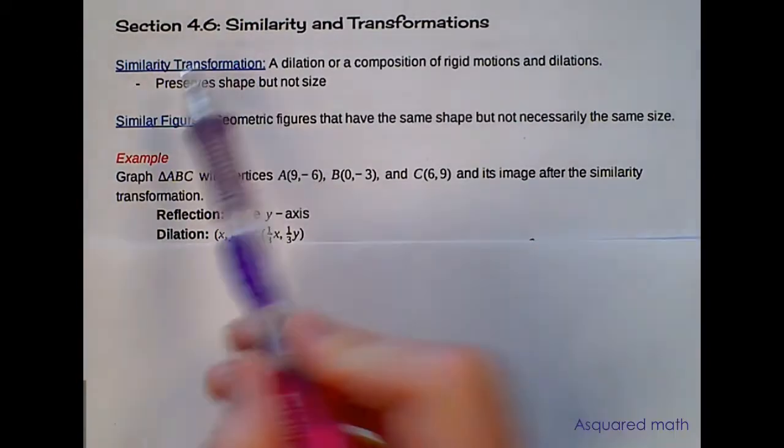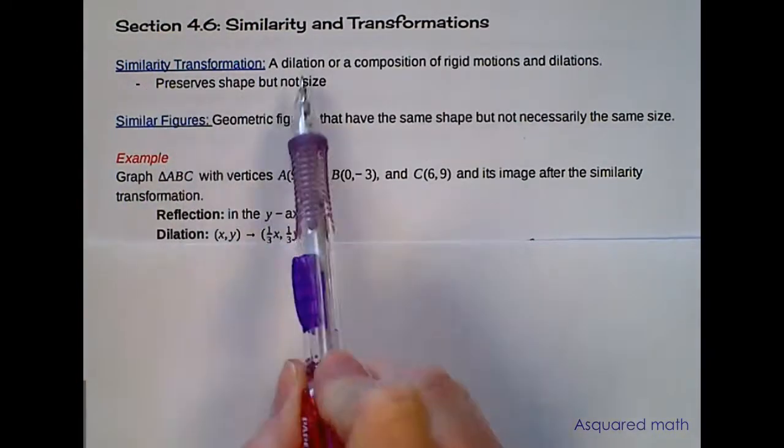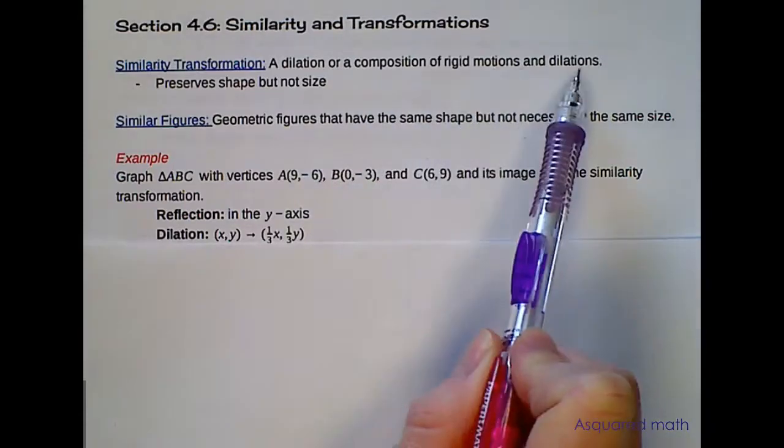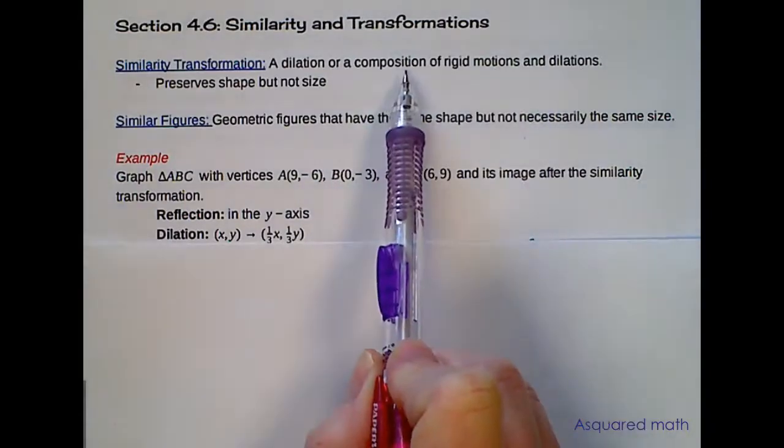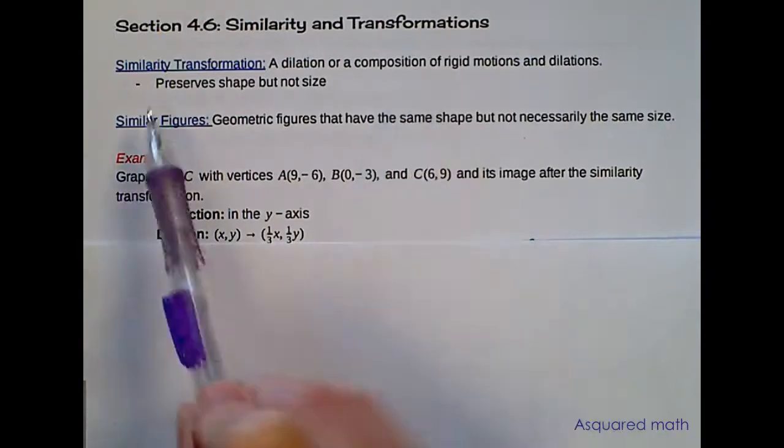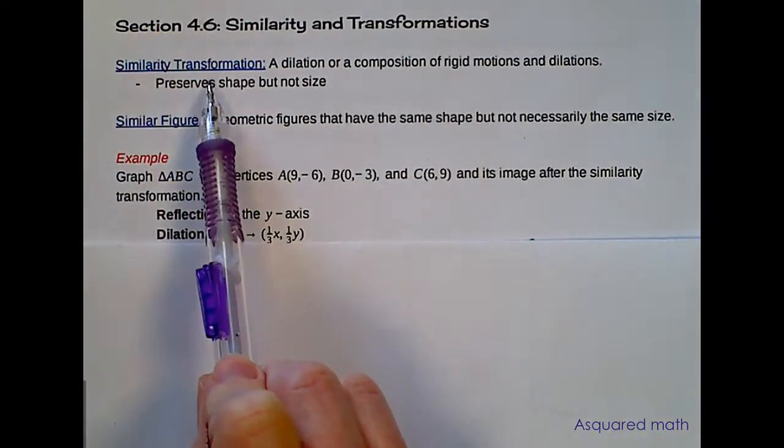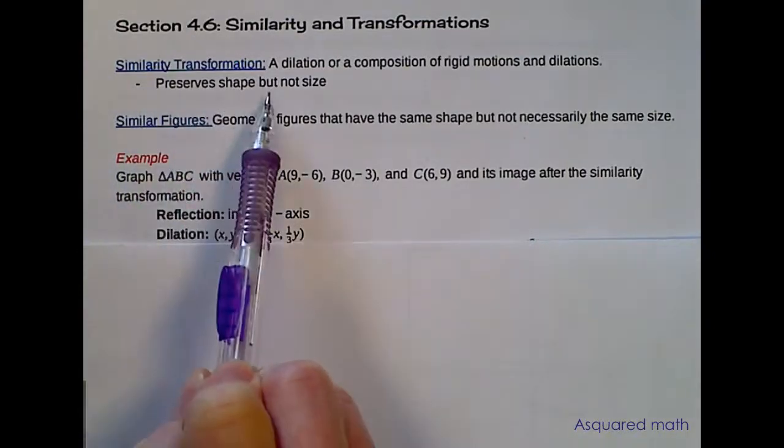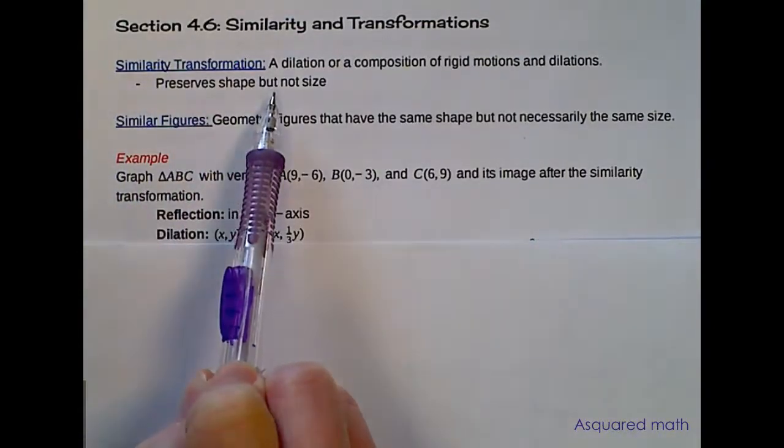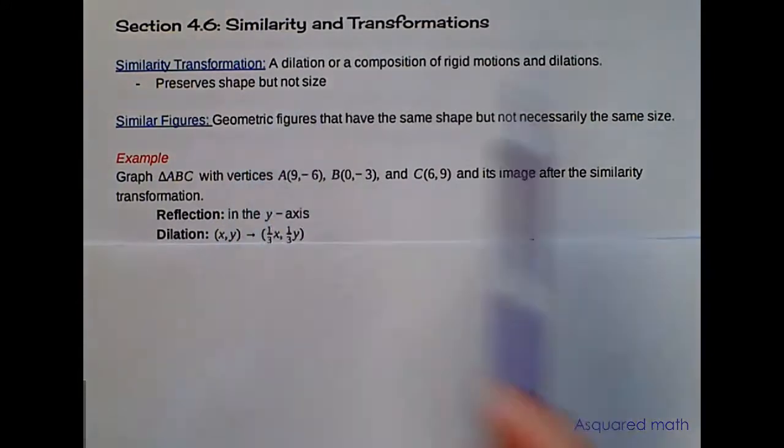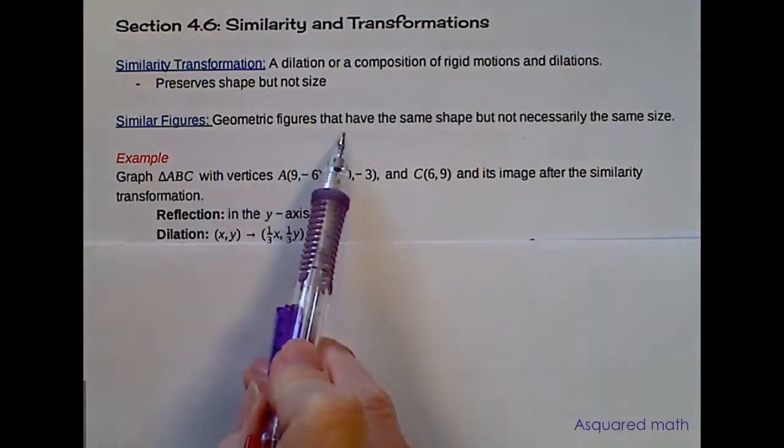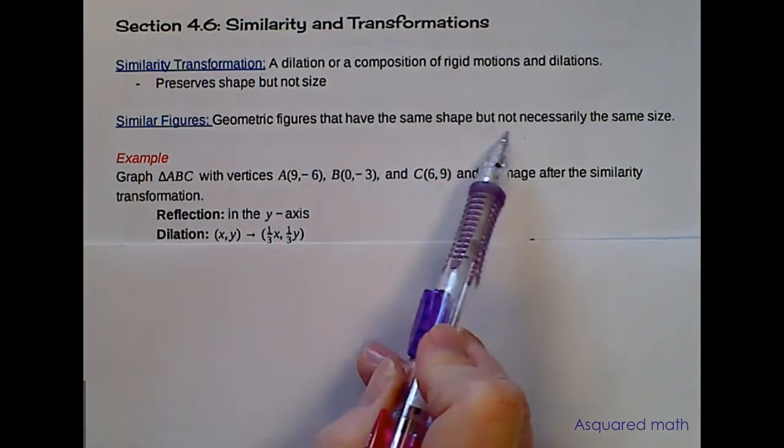A similarity transformation is a dilation or a composition of rigid motions and dilations. So composition means we're going to have more than one thing going on here. In a similarity transformation your figure preserves the shape but not its size. The side lengths will then change and then we're going to be talking about similar figures which are geometric figures that have the same shape but not necessarily the same size.